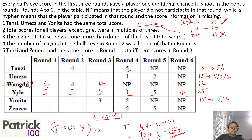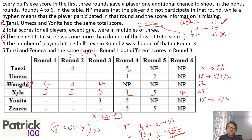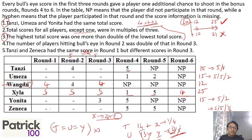We have now used almost all the information so far. The number of bullseyes in round 2 is double that in round 3. Also, Tranzi and Zeneca had the same score in round 1 but different scores in round 3. Looking at Zeneca, she has already scored in two bonus rounds, so she must have two 5s. With a score of 20 already, her third round score to make it a multiple of 3 has to be either 1 or 4.